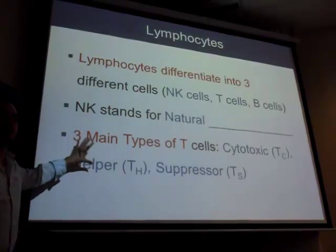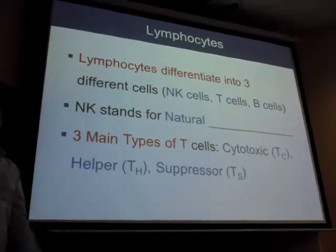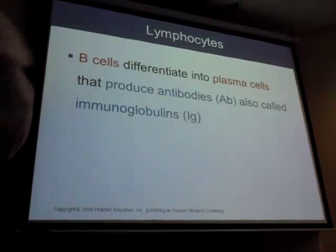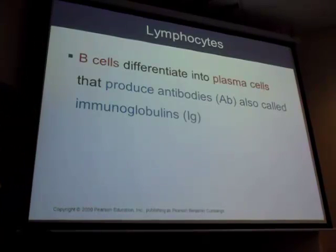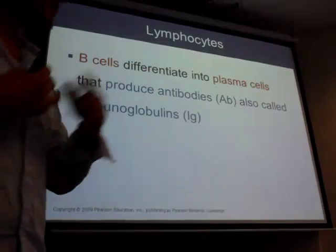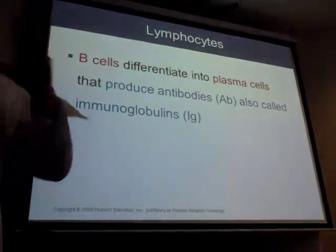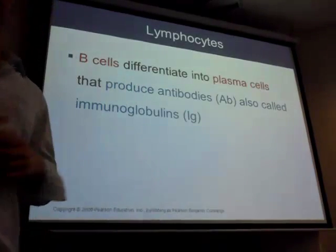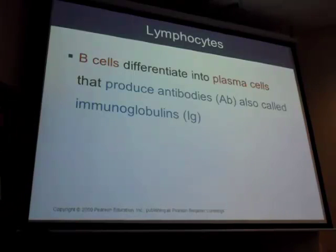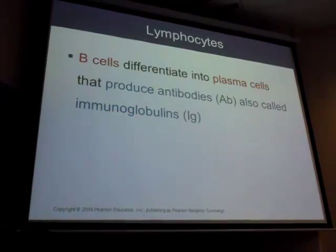B cells differentiate into plasma cells, which produce antibodies, also called immunoglobulins. Plasma has three types of proteins: globulins, fibrinogen, and albumin — the most common, mainly functioning in transport. Immunoglobulin is a globulin protein fighting during the immune response. An antibody is another name for immunoglobulin.